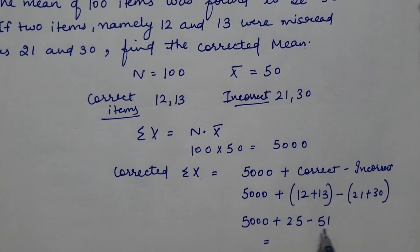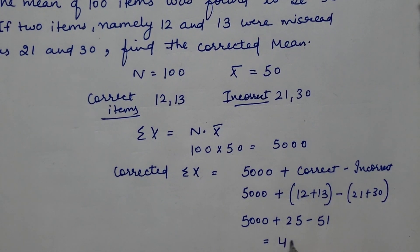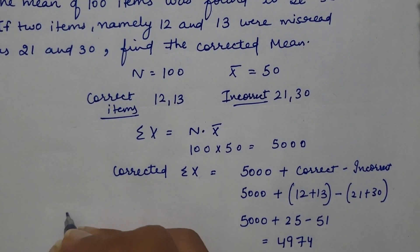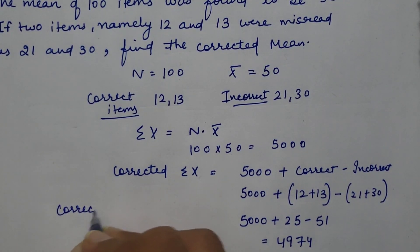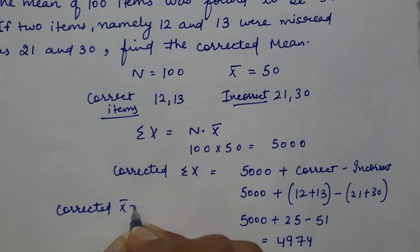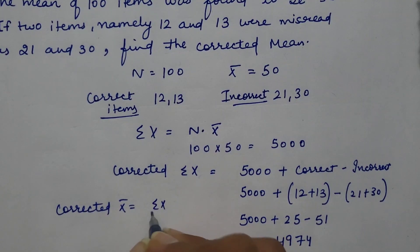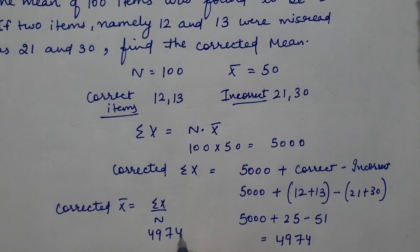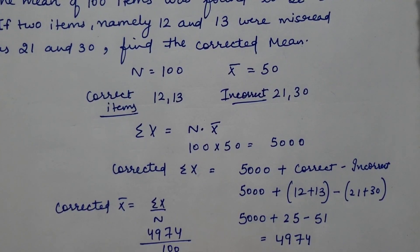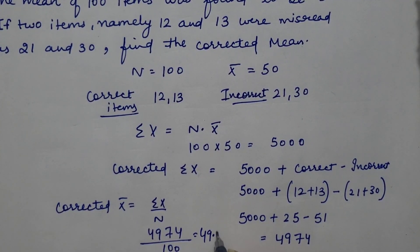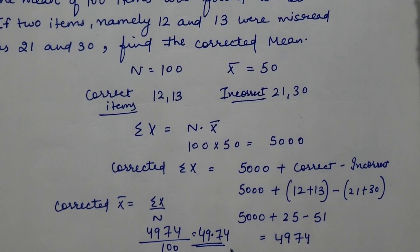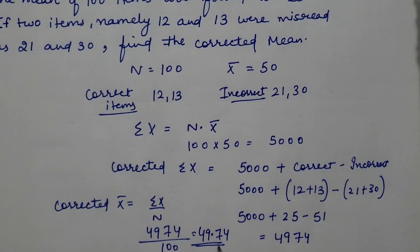5000 plus 25 minus 51. So there's a gap of 26, that would be 4974. Corrected mean would be corrected summation x upon n. 4974 divided by 100. Answer is 49.74. Corrected mean would be 49.74.